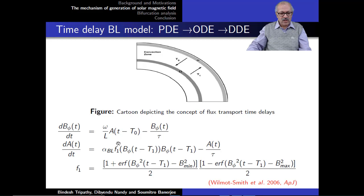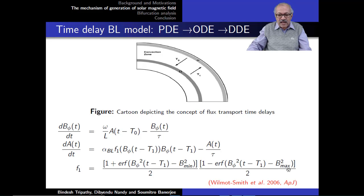When we talk about the influence of the poloidal field on the toroidal field there must be a delay of T_0, and when discussing the influence of the toroidal field on the poloidal field there must be a delay of T_1. The F_1 term, embodying the alpha coefficient, must also include this delay. So now we have a delay differential equation, and this is the model we use.